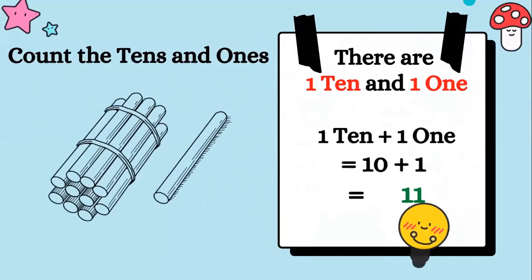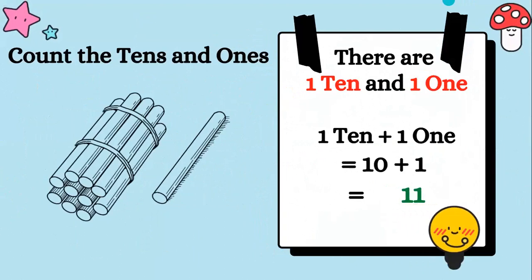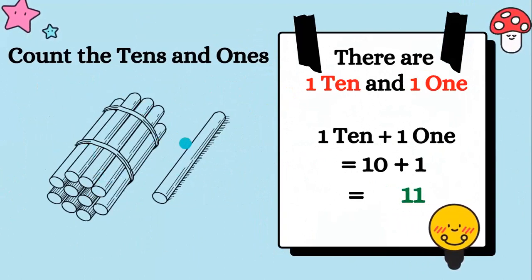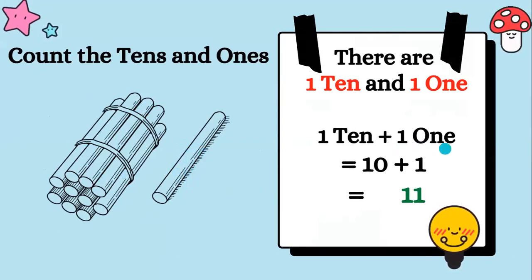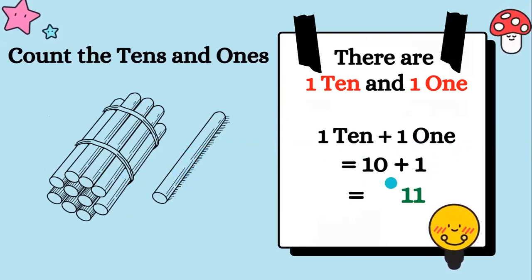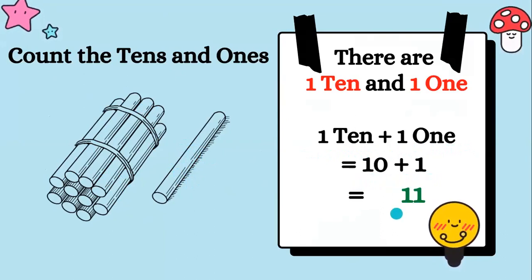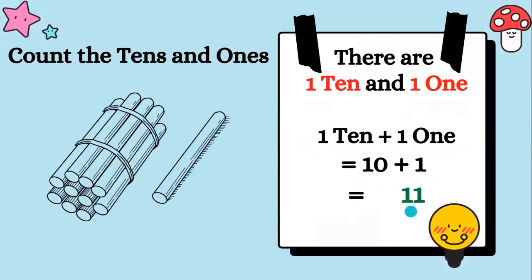It's time for practice now. Count the tens and ones. There is one ten and one one. One ten plus one one makes ten plus one, which is eleven sticks.